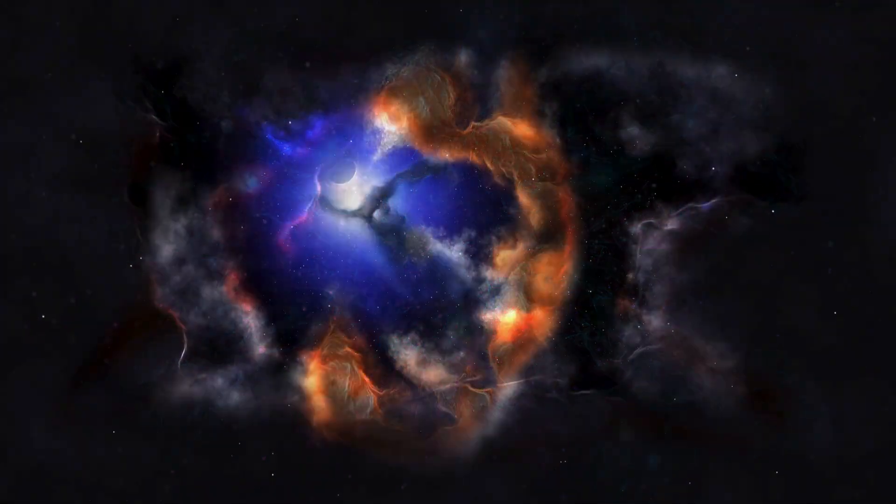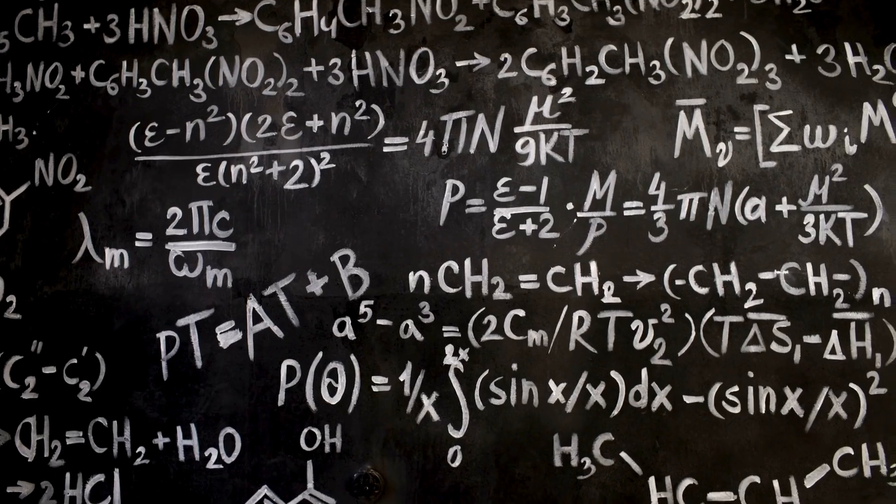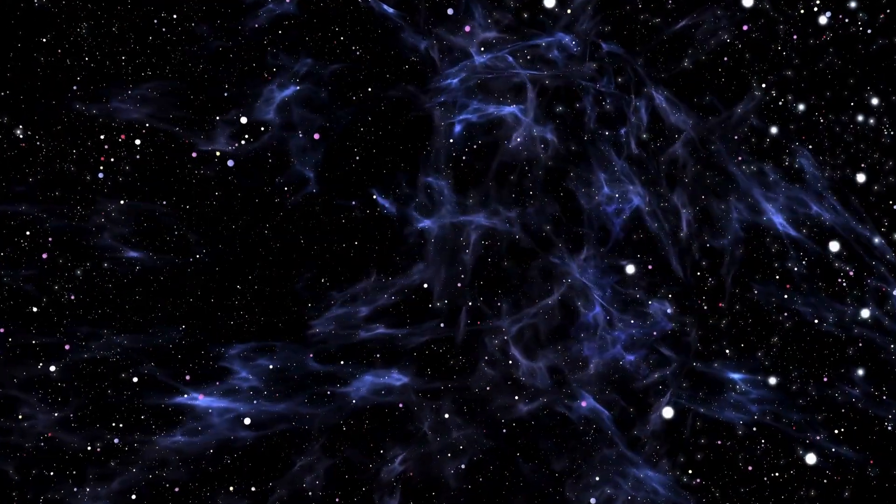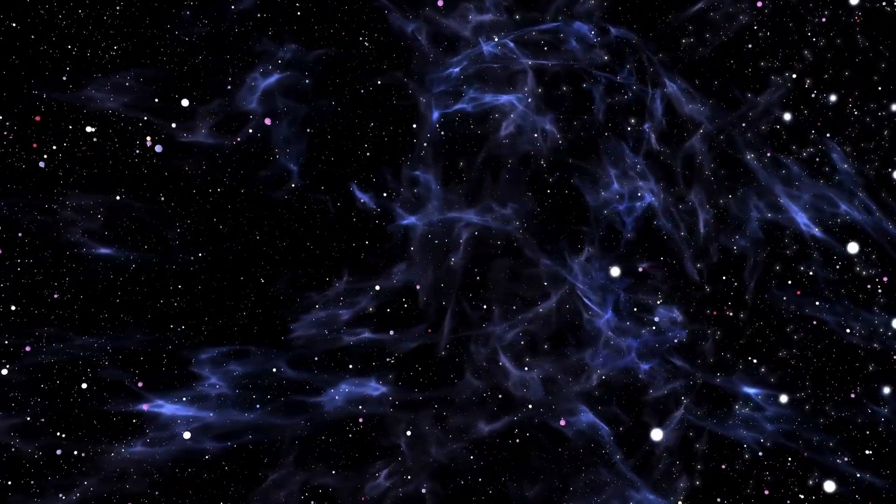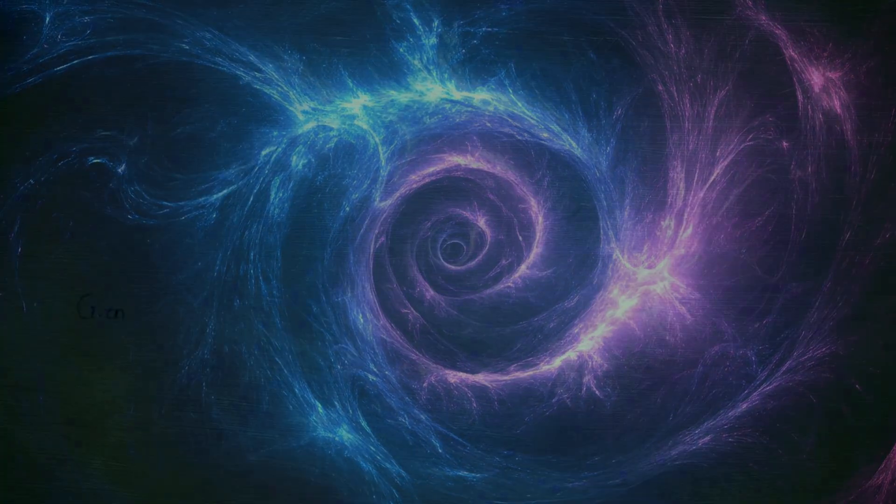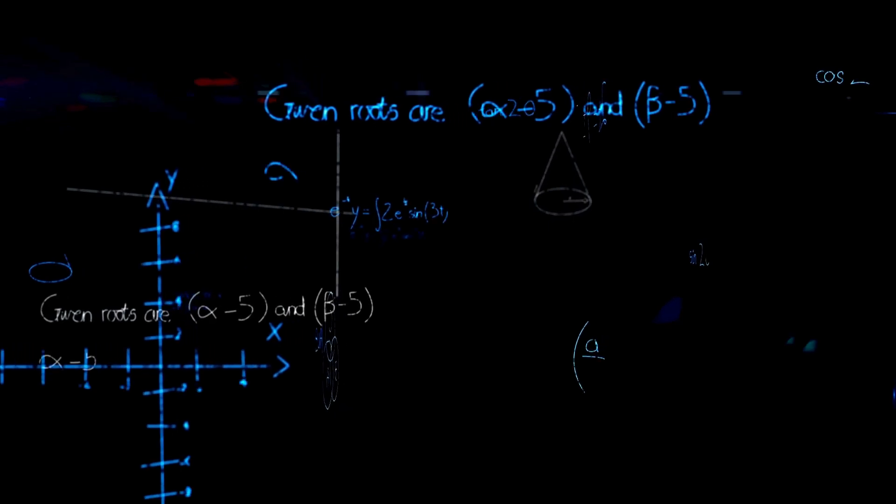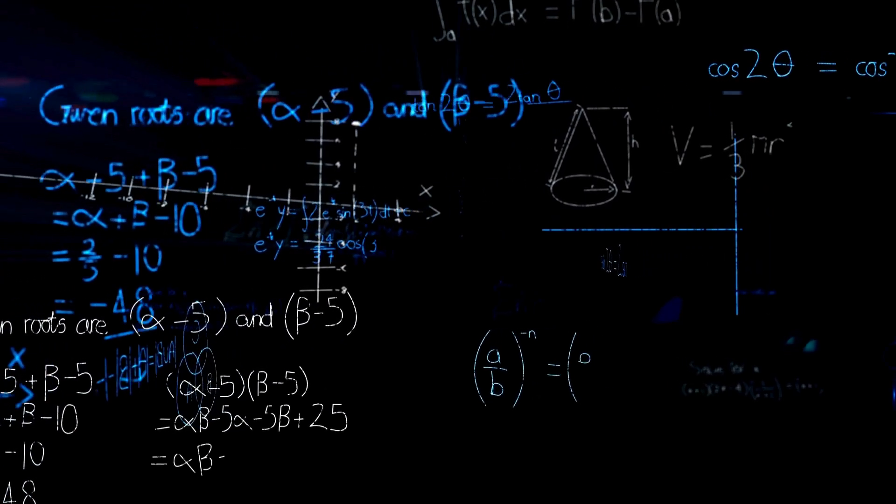String theory allows you to rotate particles into each other, turning electrons into neutrinos into quarks, and the theory remains the same. That is the symmetry of the string, and that's why it's so powerful. A simple idea that encapsulates the entire universe.